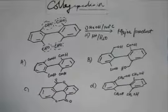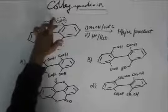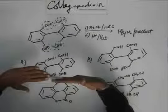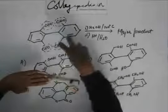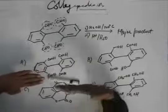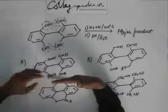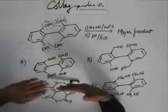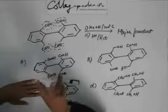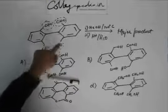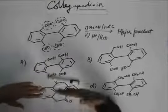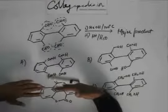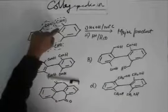Now considering and keeping this orientation in mind, if this aldehyde is attacked by the OH — this molecule is existing like this. One aldehyde is in the plane of the board, the ring that is perpendicular will have one aldehyde above the plane of the board and one aldehyde below the plane of the board. Suppose the attack is on the aldehyde which is above the plane of the board.